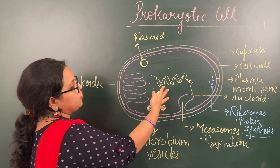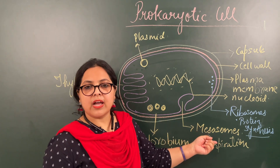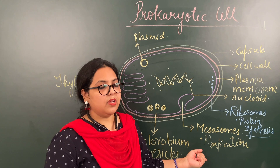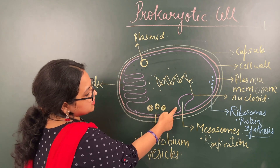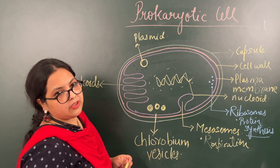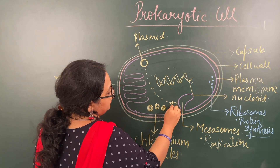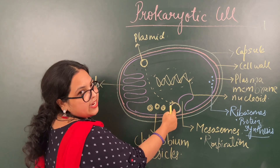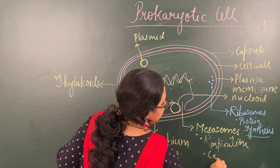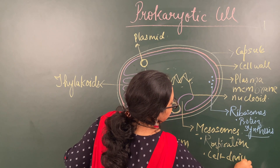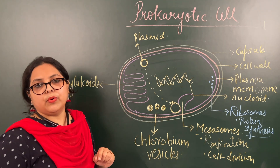That was all about the internal components of the prokaryotic cell. As mentioned, the mesozome has one more function: it helps in cell division. During cell division, the plasmid moves towards the mesozome and attaches to the plasma membrane. The mesozome is attached to the plasma membrane and helps in cell division. So here we have done with the internal structure of the prokaryotic cell.